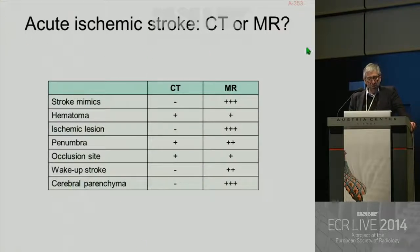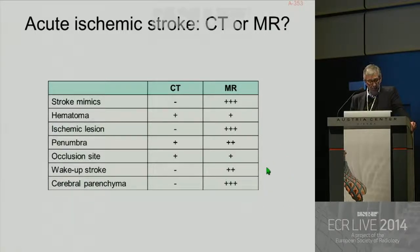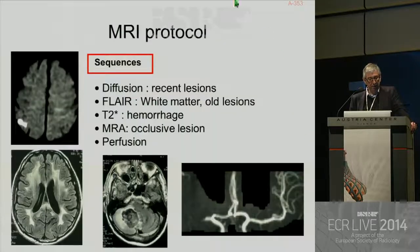Acute ischemic stroke — should we use CT or MR? It's difficult to answer. For stroke mimics, MR is probably better. For visualization of the ischemic lesion, also MR is better. For penumbra, there is still a debate. For wake-up stroke, we will see that MR is providing some interesting information. And finally, for the analysis of cerebral parenchyma, probably MR is also better.